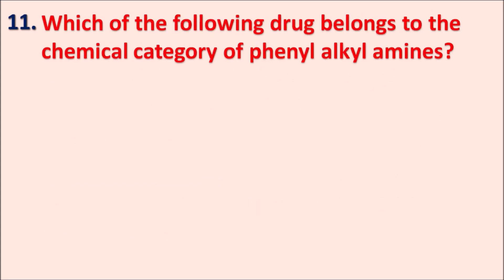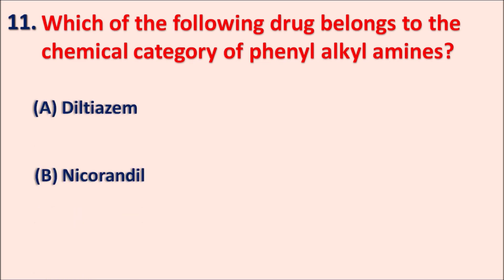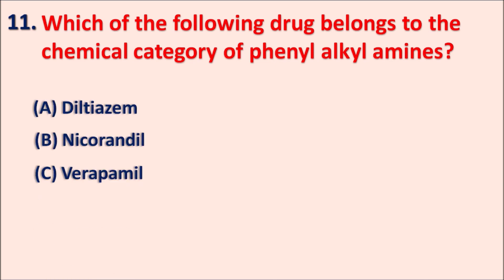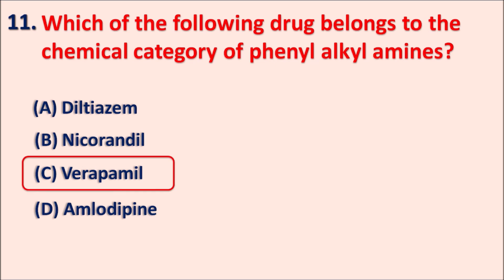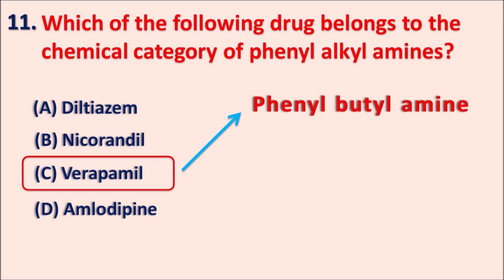Question 11: Which of the following drugs belongs to the chemical category of phenylalkylamines? Options are A. Diltiazem, B. Nicorandil, C. Verapamil, and D. Amlodipine. We have to select the drug which chemically belongs to the phenylalkylamines. The right answer is verapamil. Verapamil is a calcium channel blocker chemically belonging to the phenylalkylamines, where the phenyl group is attached with a butyl side chain, so verapamil is a phenylbutylamine.